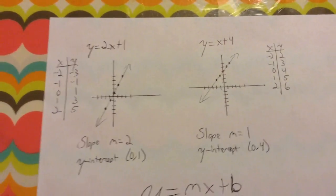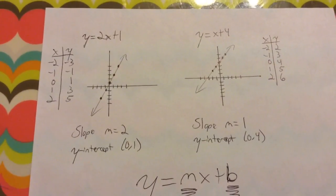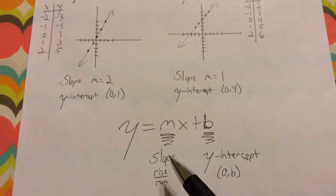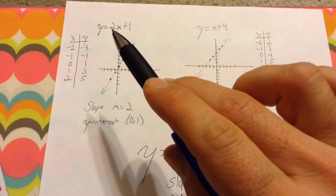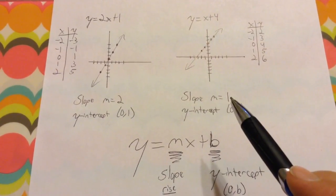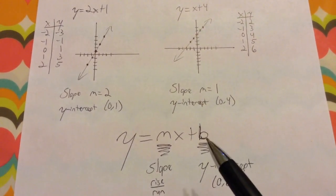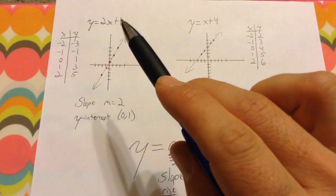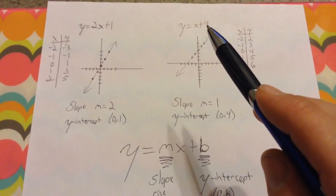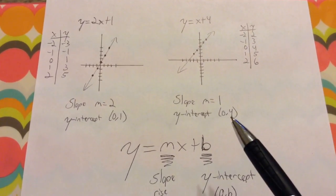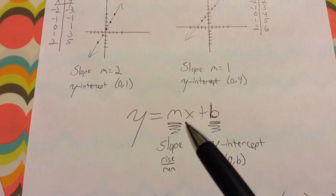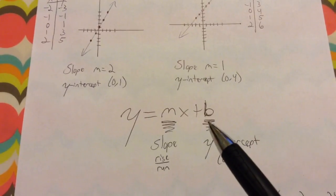What you should notice is that if I have an equation in the format y equals mx plus b, then my slope is staring me in the face right there — up 2 over 1, up 1 over 1. Also, my y-intercept is staring me in the face right here. 1 should be my y-intercept — there it is. 4 should be my y-intercept — there it is. So if I can get any equation into this format, I know what my slope is and I know what my y-intercept is.